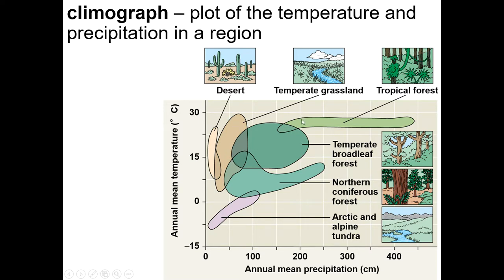With a little more rainfall, you get a grassland, which is still pretty warm. Over here is a tropical forest — it has a very narrow range of temperature. With a lot of rainfall it becomes a tropical rainforest; with less rainfall it becomes a tropical dry forest. Further along is a forest, which needs more rainfall than a grassland, and here is a coniferous forest with pine trees.